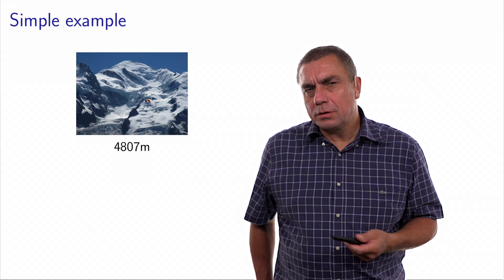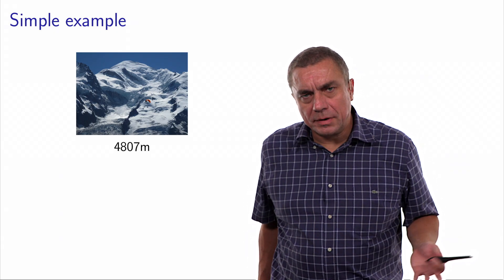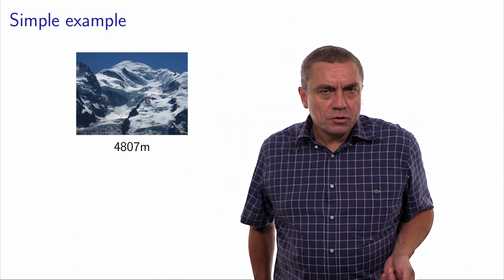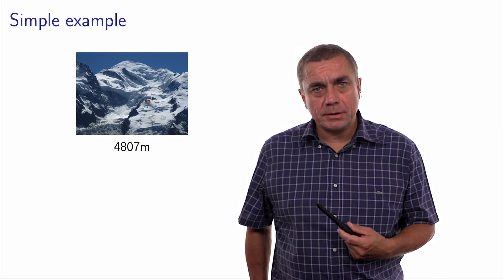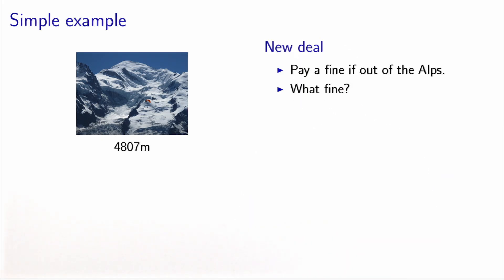Alpinists don't like constraints — they don't like to be imposed their decision. So the alpinist negotiates with the billionaire: no more constraints. A new deal is reached: the alpinist can go wherever he wants, but if he leaves the Alps, he will pay a fine. The question for the billionaire is: what amount of fine removes any incentive to leave the Alps? This is exactly what we will deal with when talking about duality.